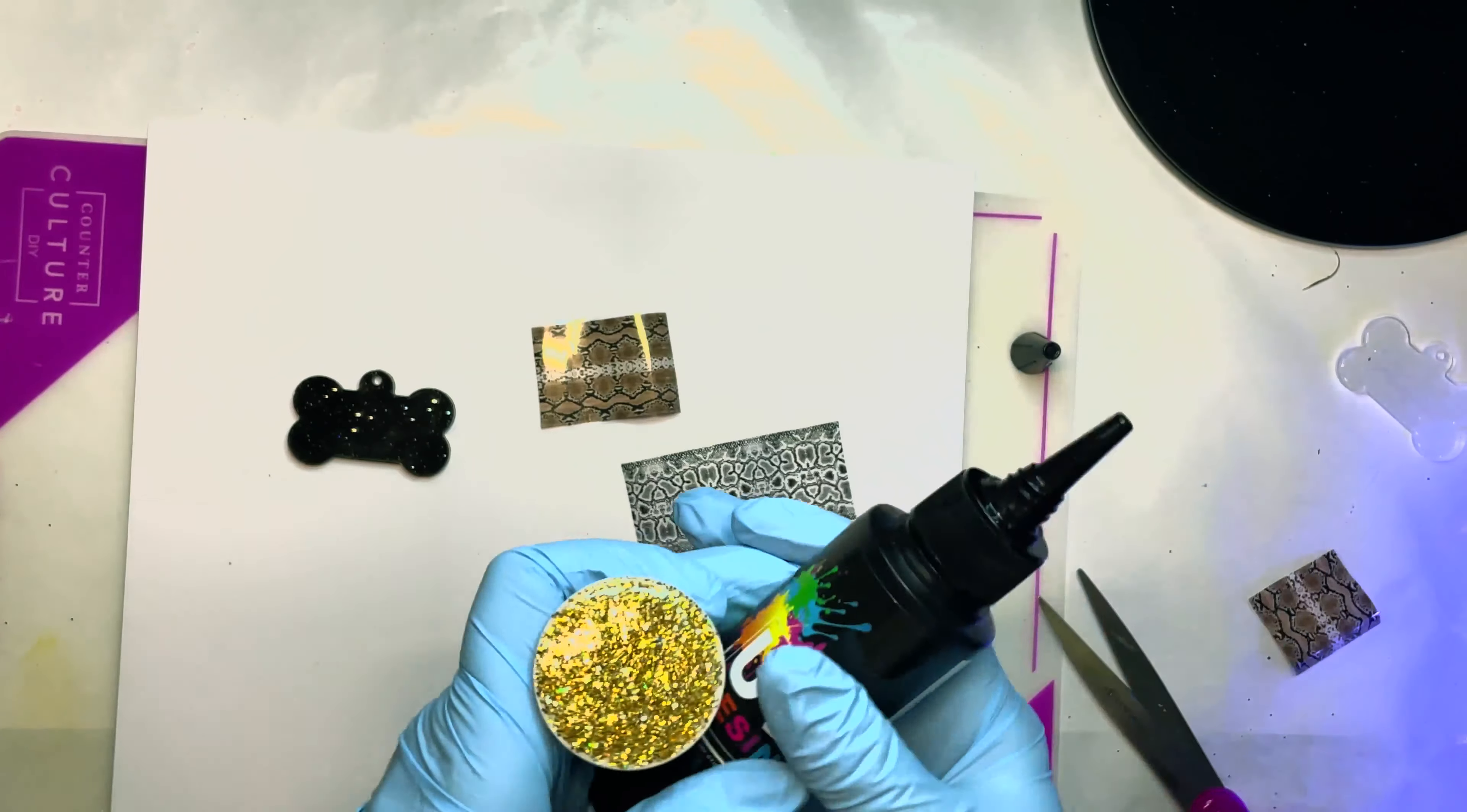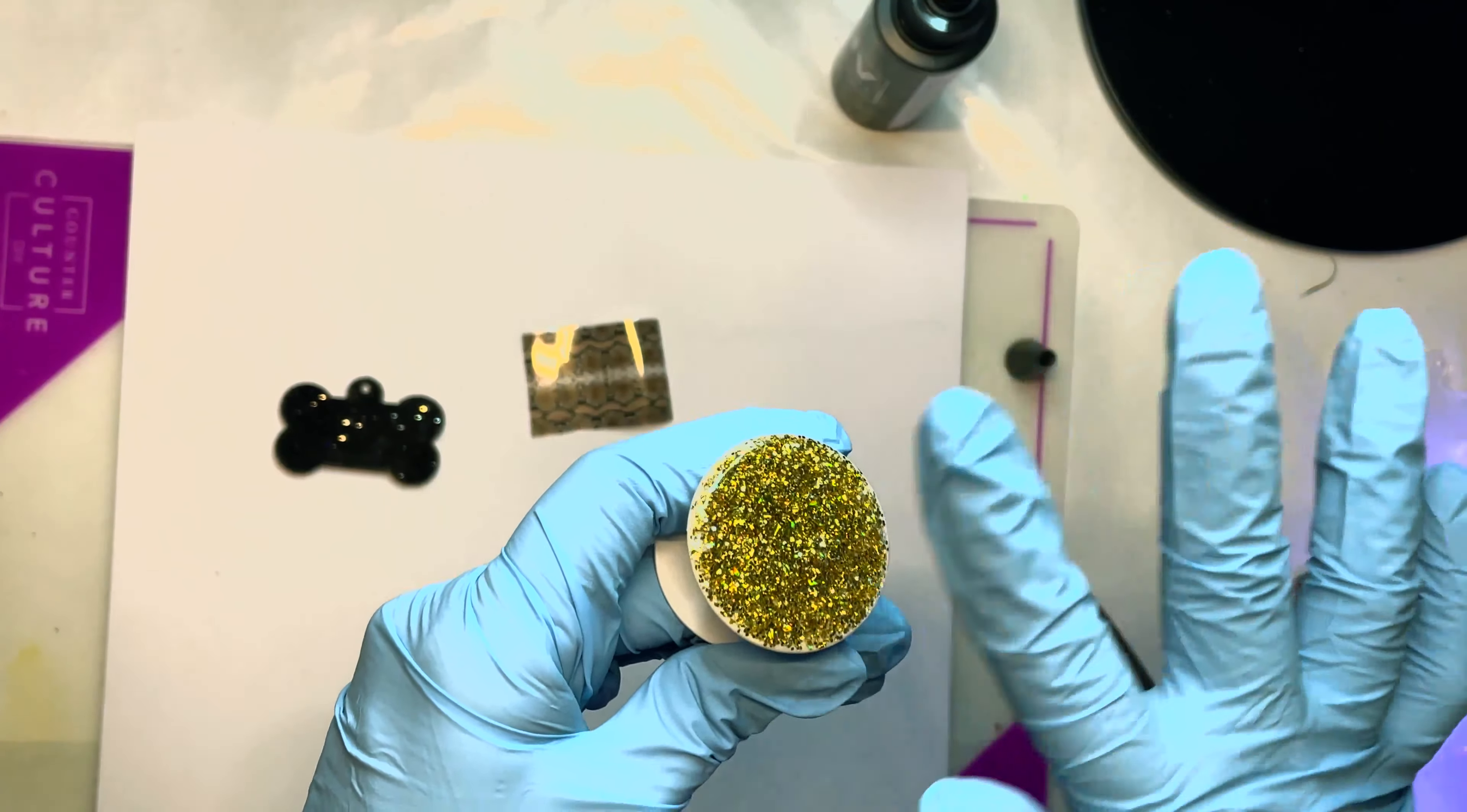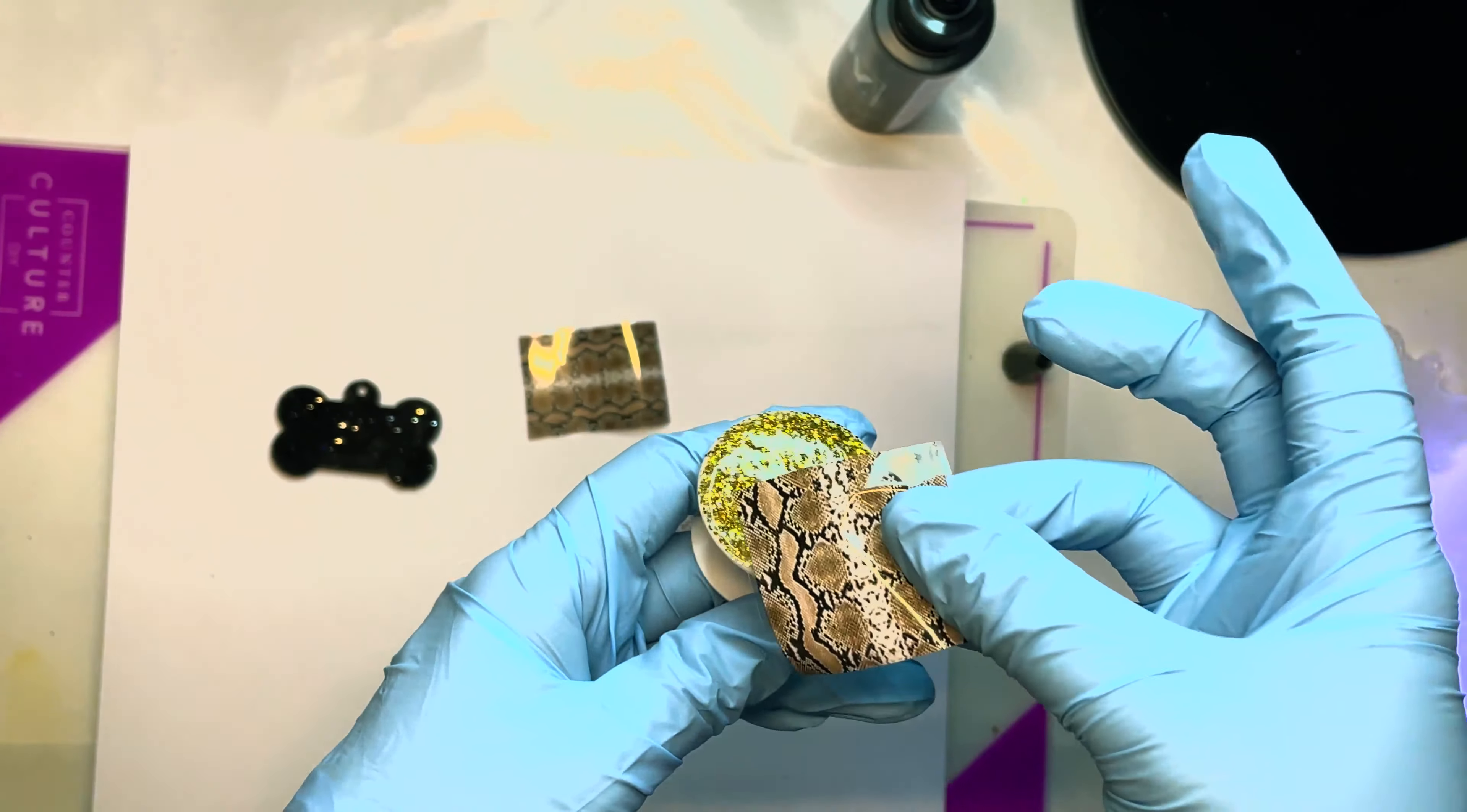First, you're going to take your UV resin and coat your piece as if you were doing an epoxy method. You only need a little tiny bit. I'm just putting it all over the entire piece.